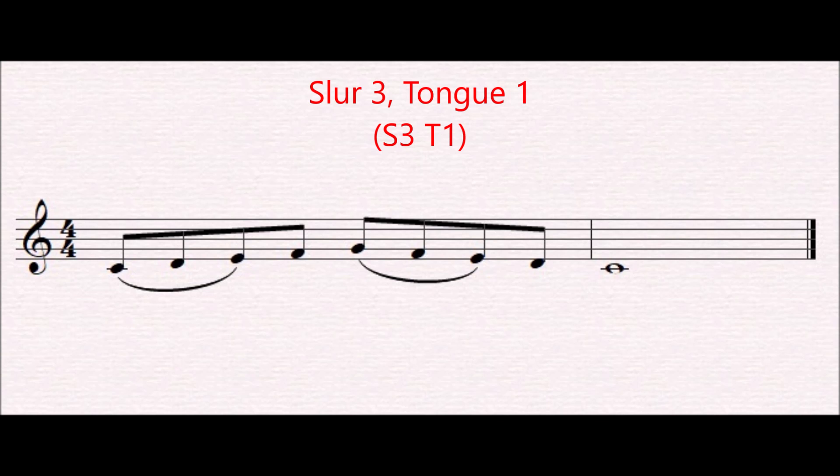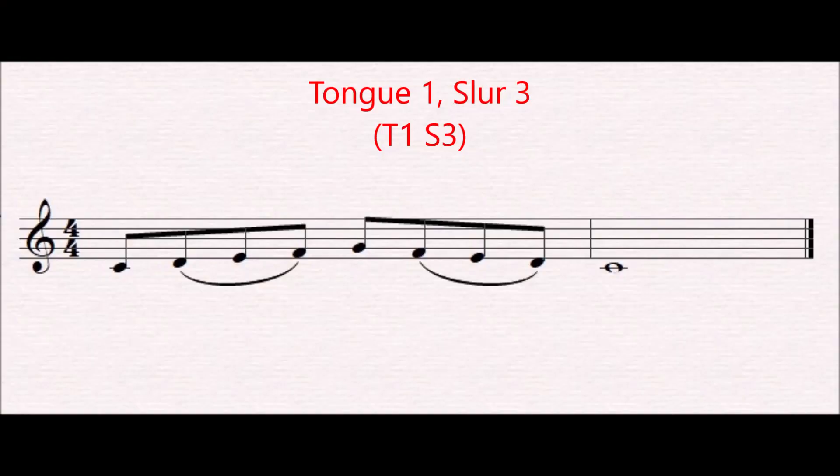For this next series, we're going to look at ways we can slur three of the four notes and tongue the remaining one. There are two ways: slur the first three notes and tongue the last one, or tongue the first note and slur the other three. Let's start with 'slur three, tongue one' — we tongue the C and the F, then tongue the G and the D. Then we'll do 'tongue one, slur three.' Groups of three — pretty simple.